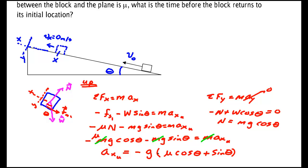So g is a constant, the coefficient of friction is a constant, the cosine for a fixed angle is a constant, and the sine for a fixed angle is a constant. So this is constant. One may apply the kinematic equations on the way up.